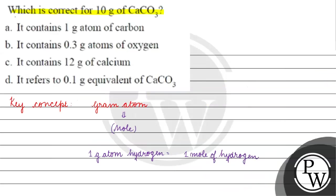Coming back to the question. Option A asks whether 10 grams of calcium carbonate contains 1 mole of carbon — it does not, since we have only 0.1 mole of carbon. So option A is incorrect. Option B says it contains 0.3 gram atoms of oxygen, meaning 0.3 moles of oxygen — this statement is correct.